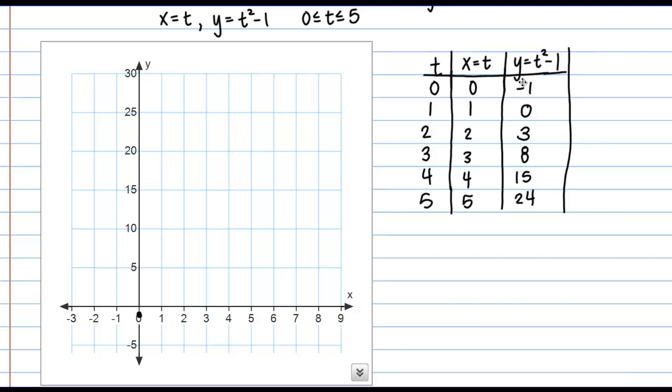And then I have the point 1, 0, so x equals 1, y equals 0. And then the point 2, 3, so about here. And then 3, 8, 4, 15, and 5, 24.